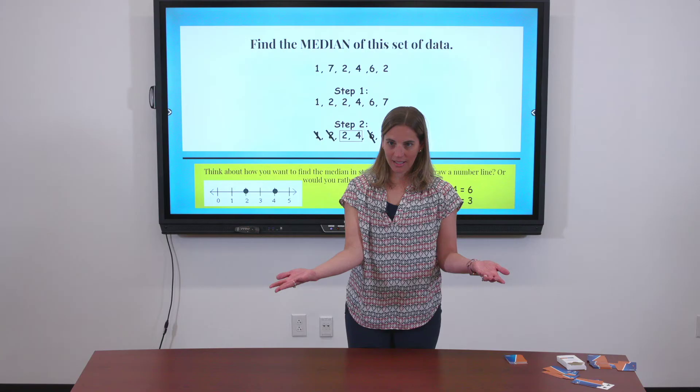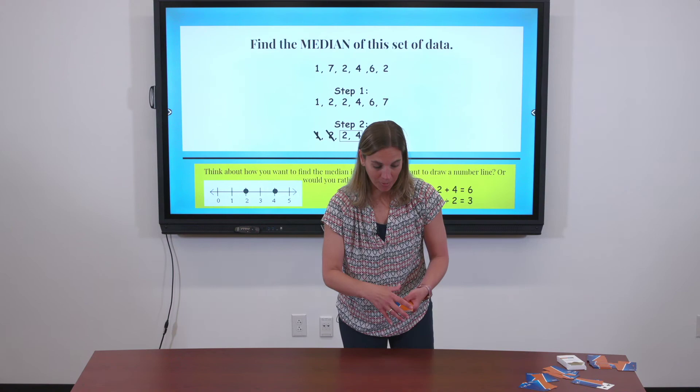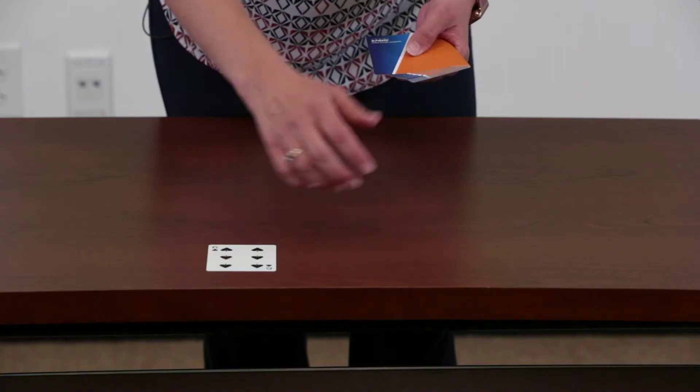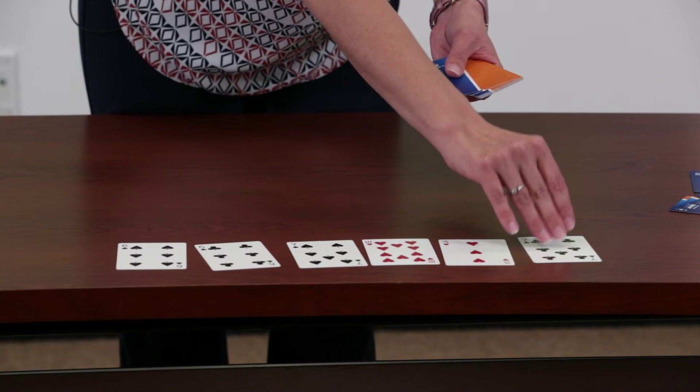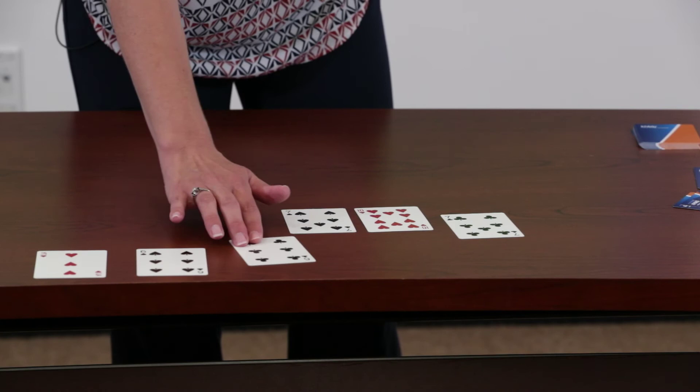Let's try this one more time with even numbers. Here we go — pulling six cards. This time in numerical order: three, six, seven, seven, and ten.